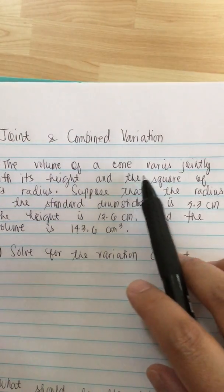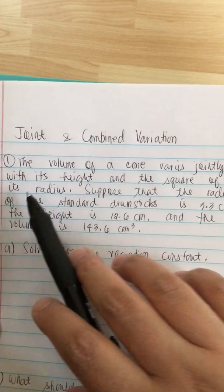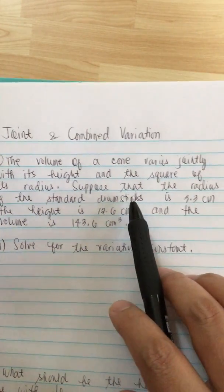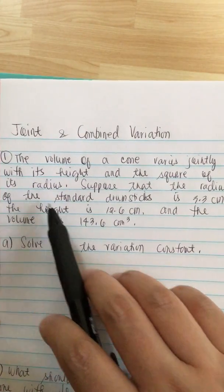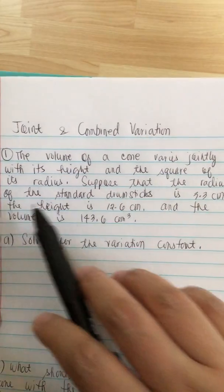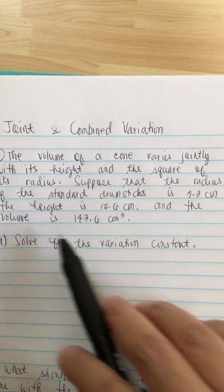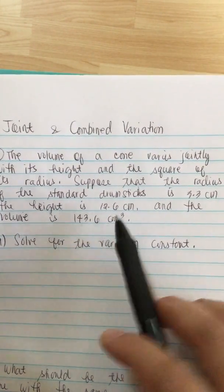The volume of a cone varies jointly with its height and the square of its radius. Suppose that the radius of the standard drumstick is 3.3 cm and the height is 12.6 cm and the volume is 143.6 cm³.